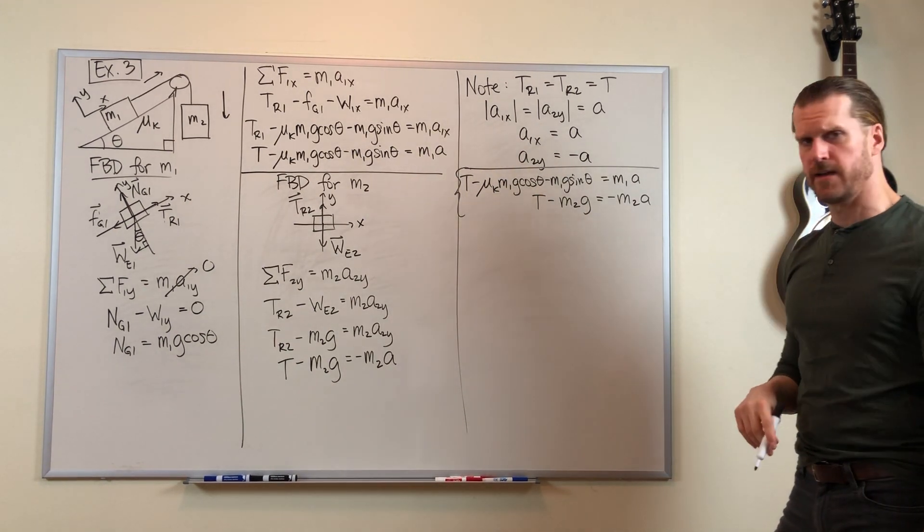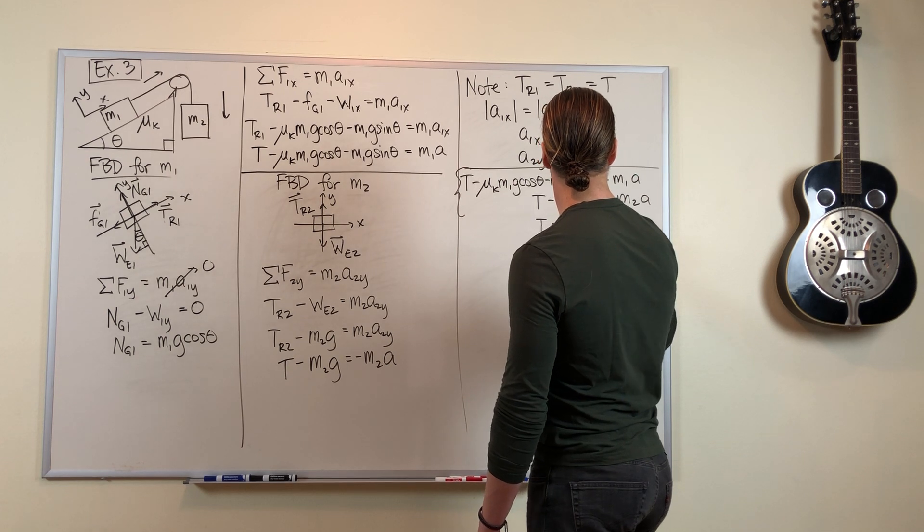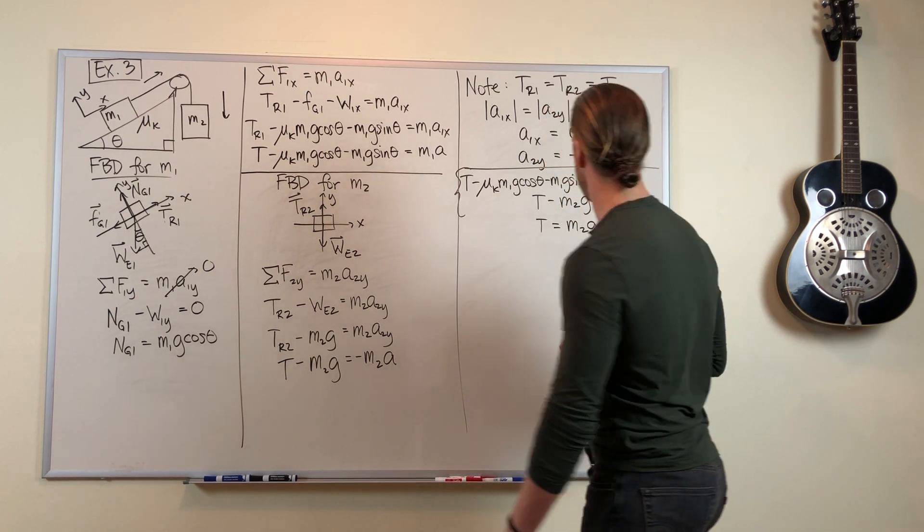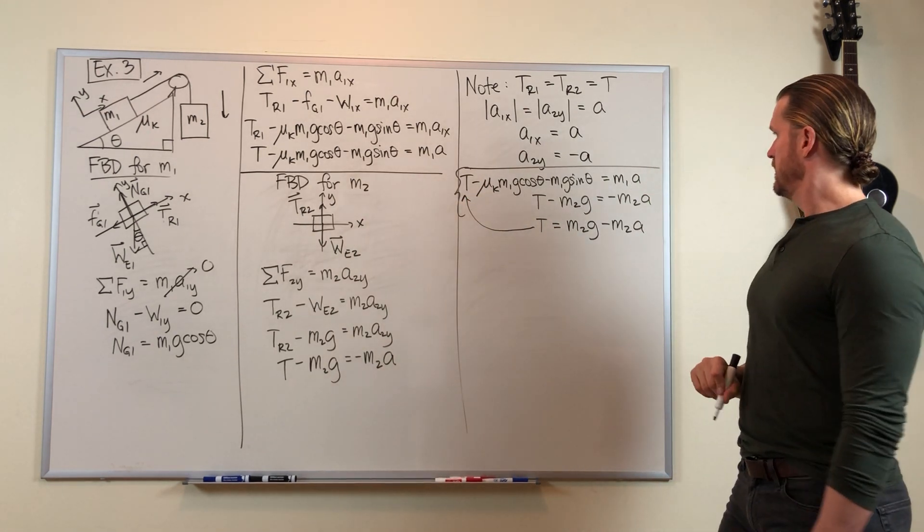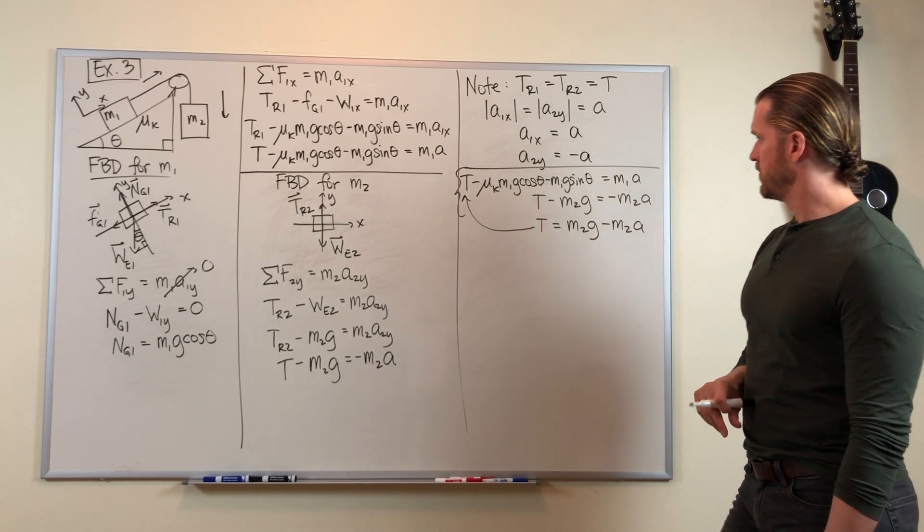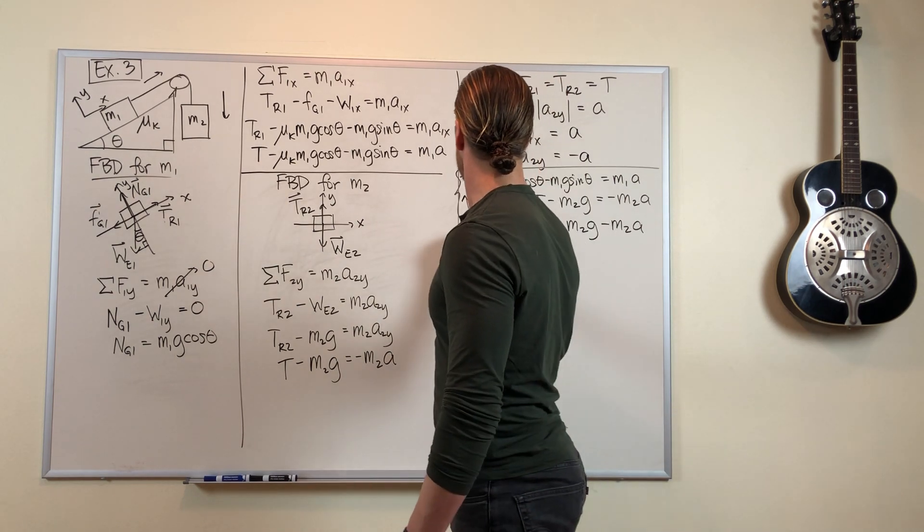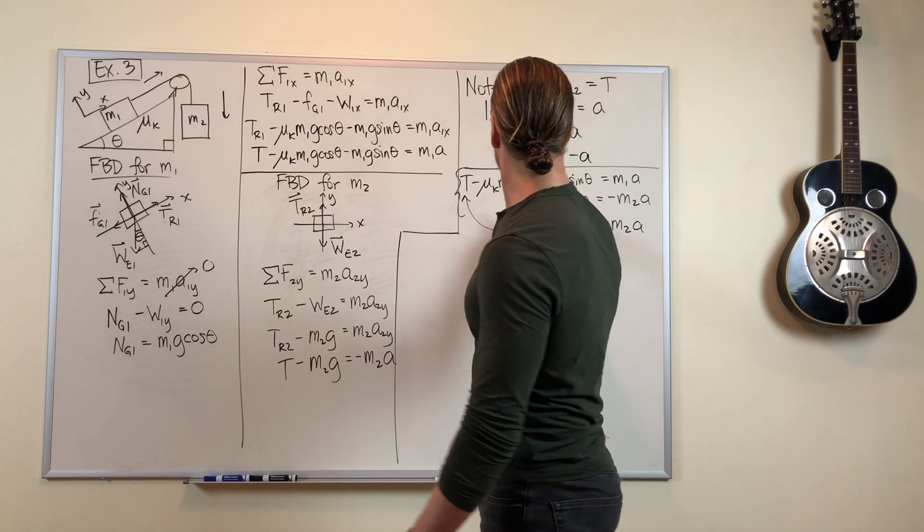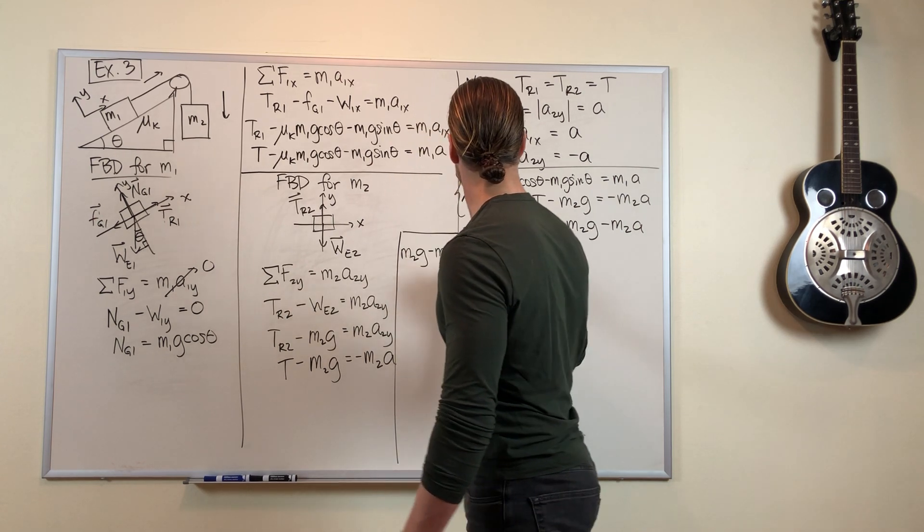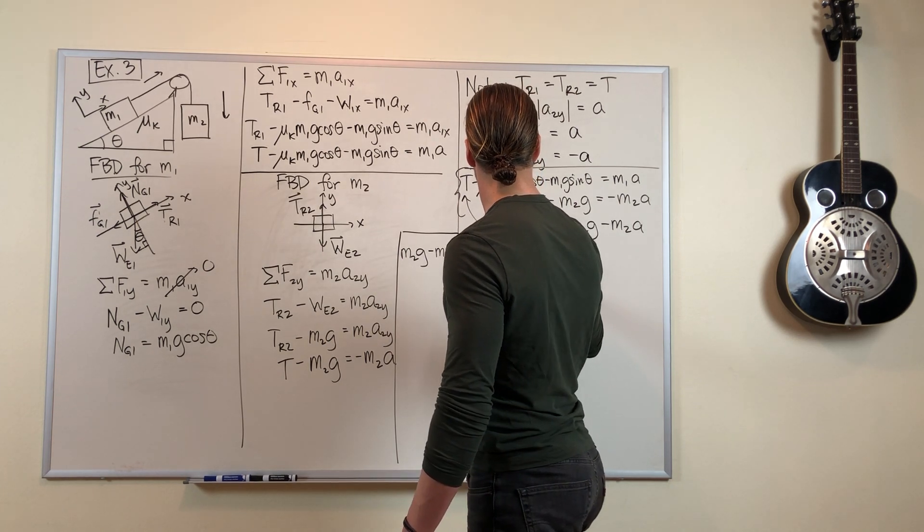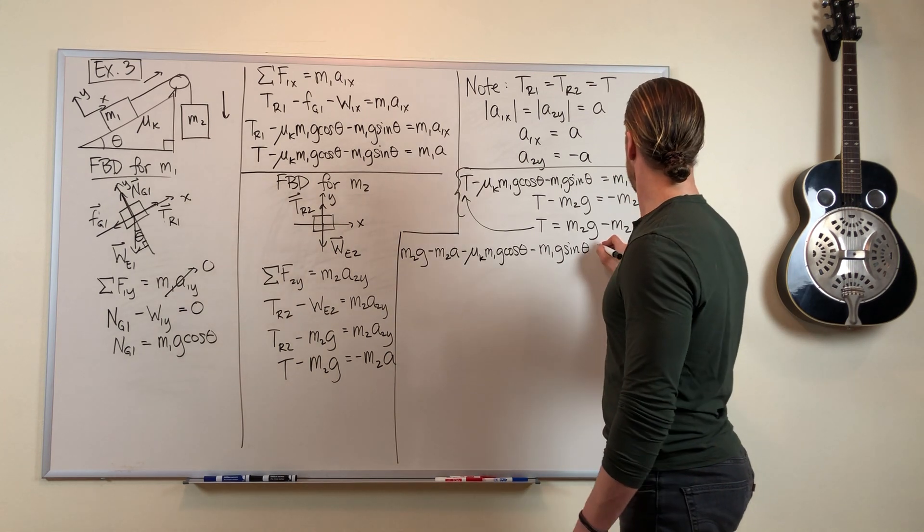There's our system of equations. And once again I think I'll solve it by substitution. Note that T equals m2g minus m2a. That comes from this equation. And now I'll substitute that into the first equation. Now we're going to get a huge pile of stuff in my big new whiteboard. Might not be big enough to fit all this. Okay, substituting this expression for T. We've got m2g minus m2a minus mu m1g cos theta. That was the friction force. Minus m1g sin theta. That was the gravity force. Equals m1a.